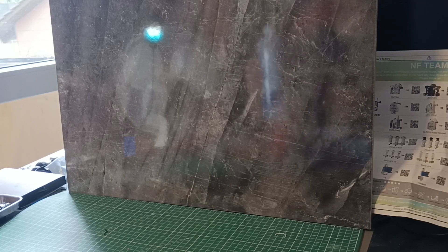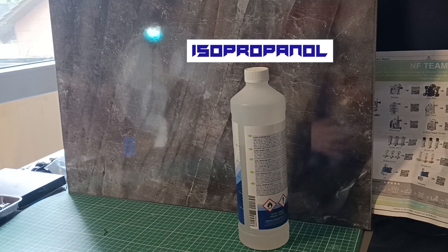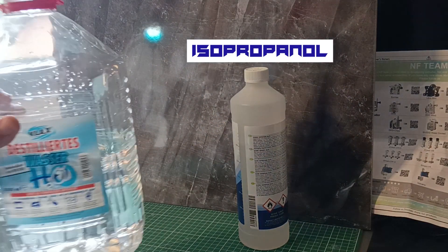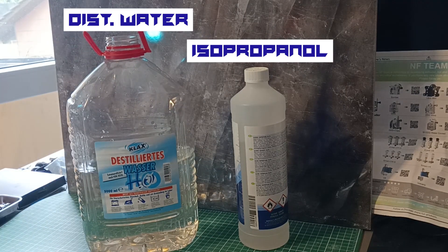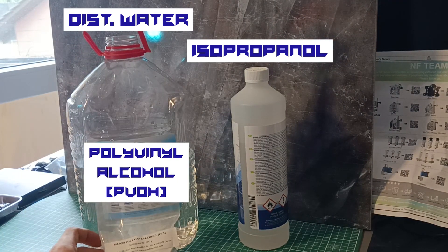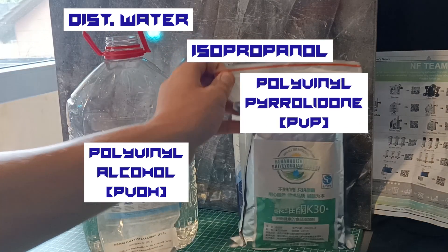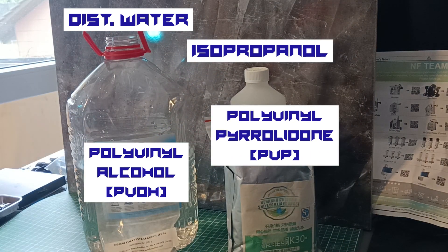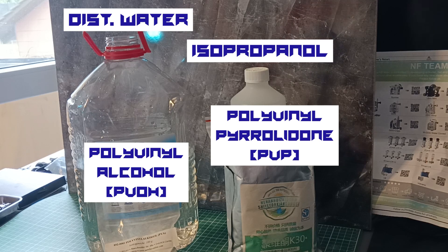The mixture really only consists of four easy components. Isopropanol, which most of you guys have laying around anyways. Distilled water, which you can buy for cheap at your local supermarket or hardware store. Polyvinyl alcohol, PVOH powder. And polyvinyl pyrrolidone, PVP powder. Both of which are quite easy and cheap to source. But we'll get to that part later.